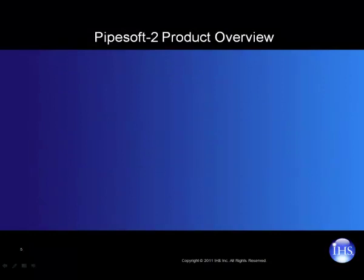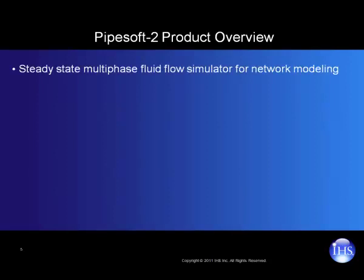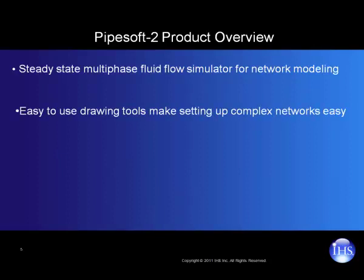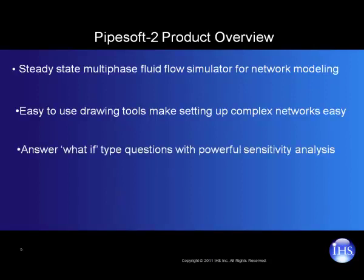Oftentimes, production optimization solutions are required for an entire network, not just a single well. PipeSoft is a steady-state, multi-phase fluid flow simulator that allows you to model nearly any type of pipeline network, whether it is steam, gas condensate, or an oil gathering or injection system. Its easy-to-use interface and simple but powerful drawing tools make setting up the most complex of networks a breeze. PipeSoft also lets you model up to 15 different what-if scenarios to determine the impact of a change in the network's operating conditions, like studying compressor power requirements or setting up chokes to meet sales pressure demands.